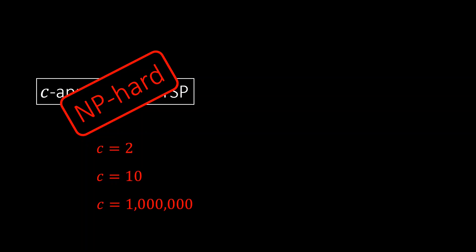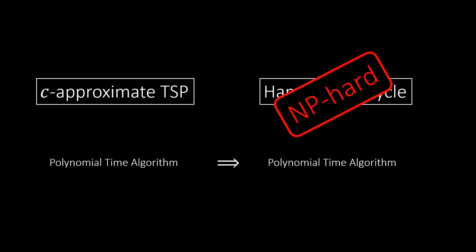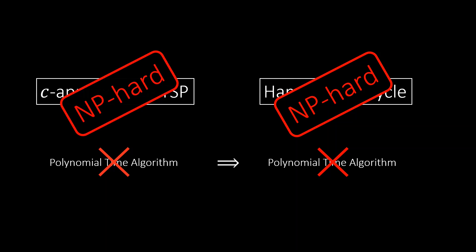For the proof, we use a reduction to a known NP-hard problem, the Hamiltonian cycle problem. The reduction shows that if we could approximate TSP in polynomial time, we can also do so for Hamiltonian cycle. But since Hamiltonian cycle is NP-hard, no such algorithm exists. Hence, no polynomial time algorithm can exist for TSP. And therefore, C approximating TSP is NP-hard.